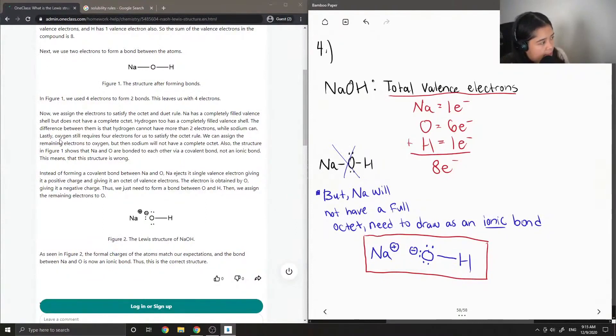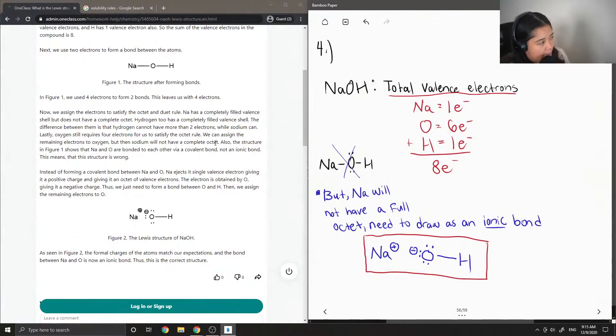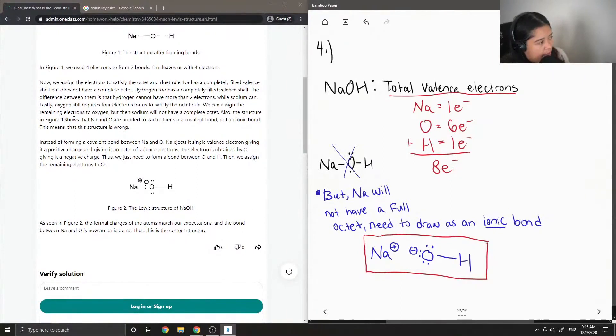Lastly, oxygen still requires four electrons for us to satisfy the octet rule. We can assign the remaining electrons to oxygen, but then sodium will not have a complete octet. Also, the structure in figure one shows that sodium and oxygen are bonded to each other via a covalent bond, not an ionic bond.